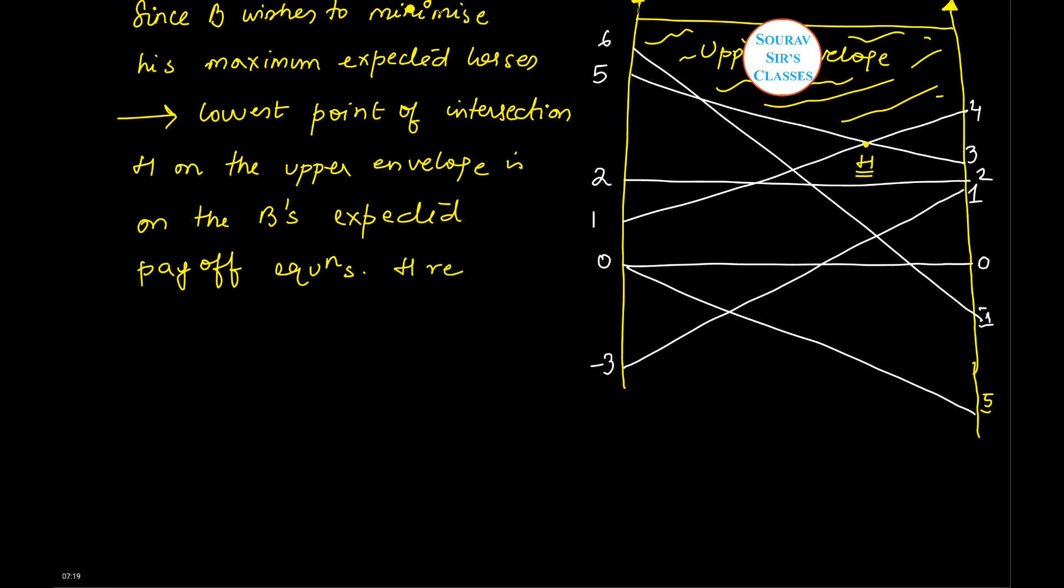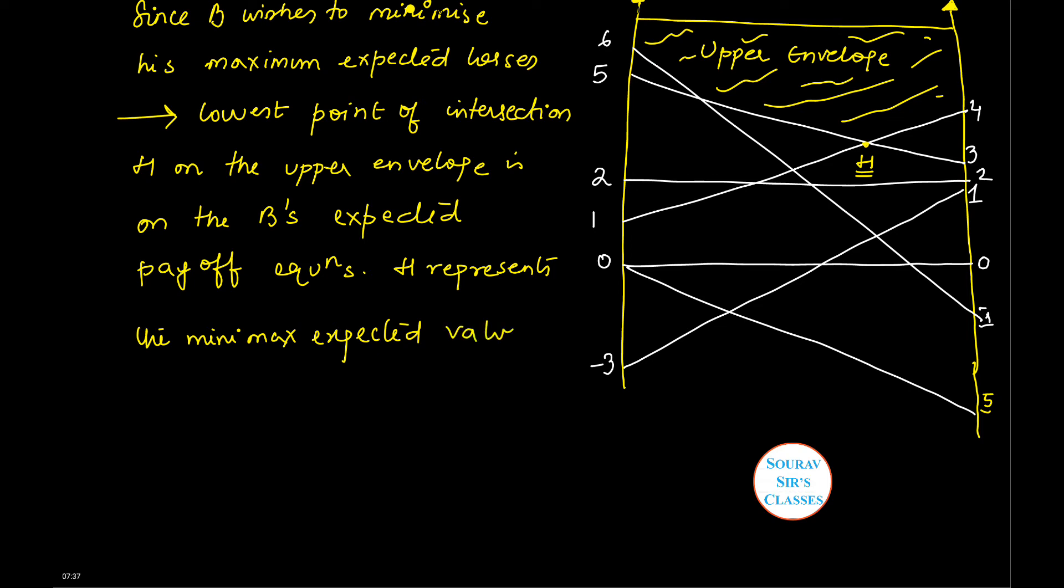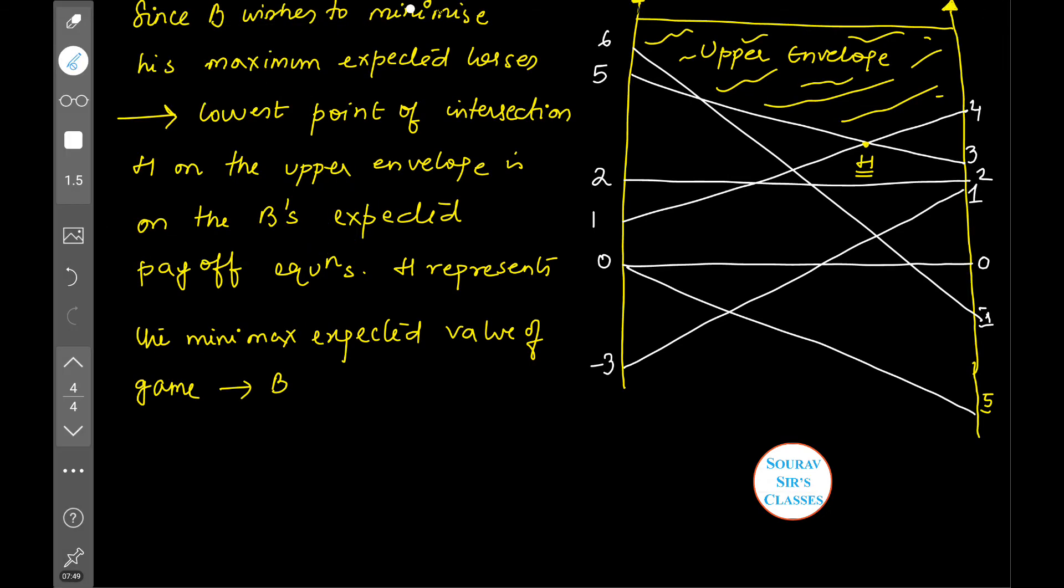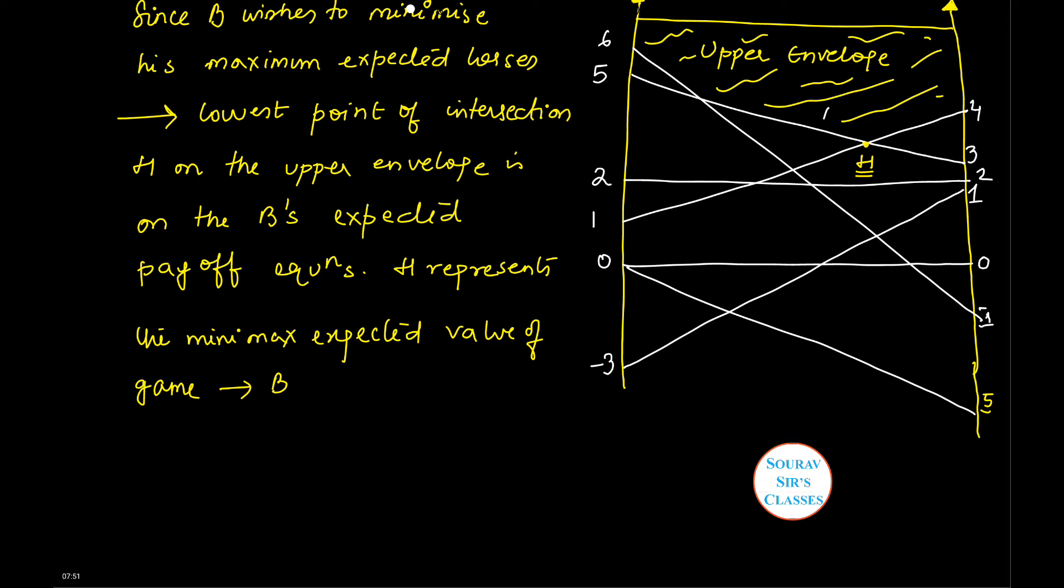Now what does this H represent? H represents the minimax expected value of the game for B.